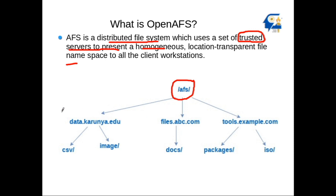The namespace starts with a root. Under the root namespace you can have different sites — site 1, site 2, and site 3. A site is also called a cell, and each site runs its own AFS system.